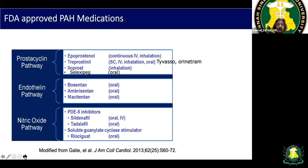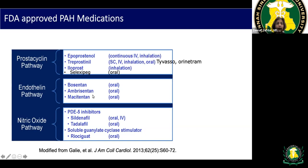Available medications include: IV prostanoids — epoprostenol (Flolan) and treprostinil (Remodulin) as subcutaneous, IV, inhaled, or oral forms — and selexipag, the IP receptor agonist in oral form. Endothelin receptor antagonists include bosentan (requires monthly liver function testing), ambrisentan (less frequent monitoring), and macitentan. For the nitric oxide pathway: phosphodiesterase-5 inhibitors sildenafil and tadalafil, and riociguat — a guanylate cyclase stimulator.